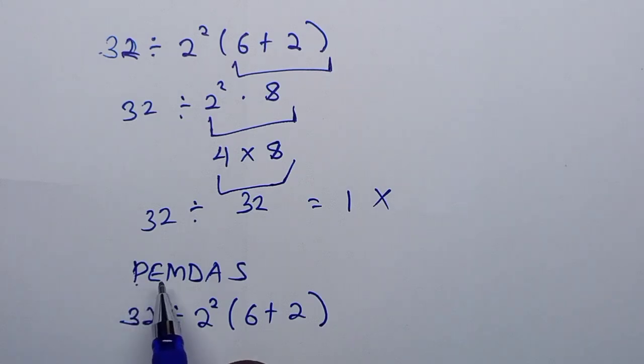PEMDAS: this is Parentheses, Exponents, Multiplication, Division, Addition, and then Subtraction. So according to this, parentheses we work out first. So this is 6 plus 2, which is 8, times 2 squared.